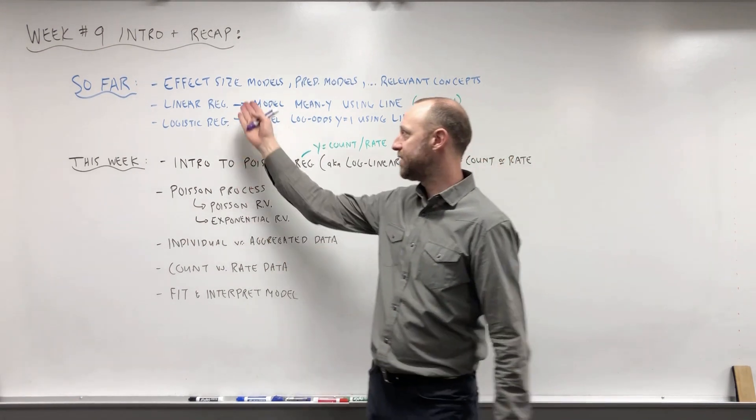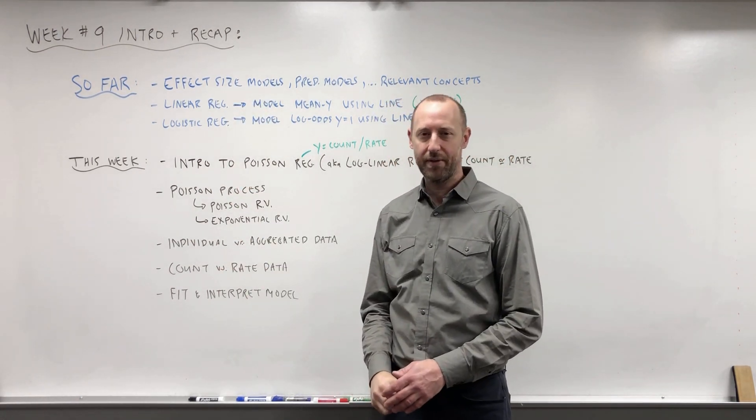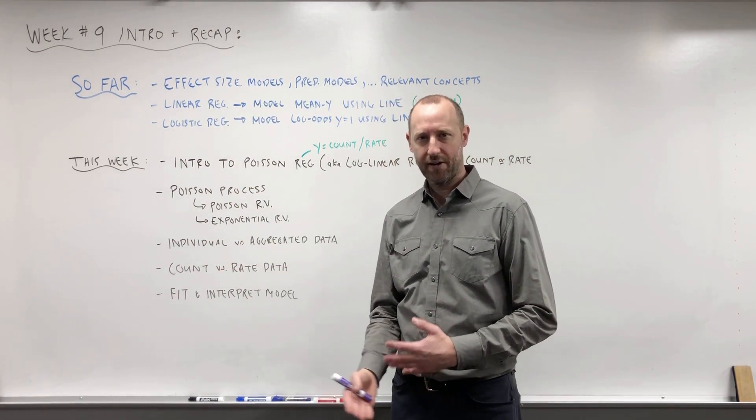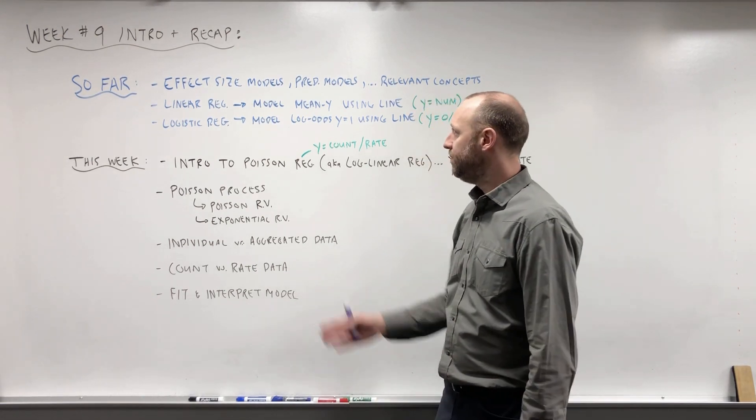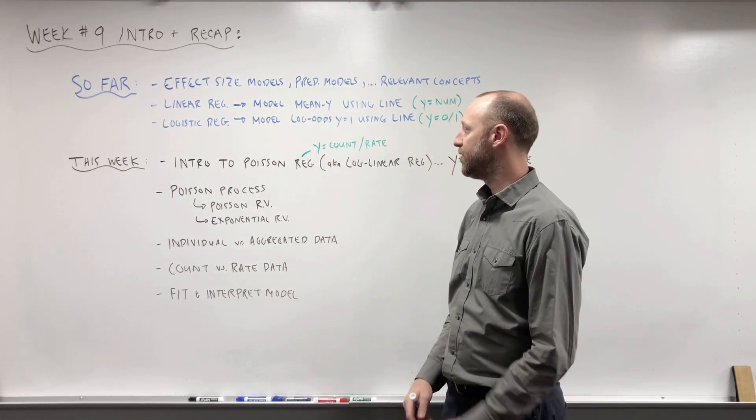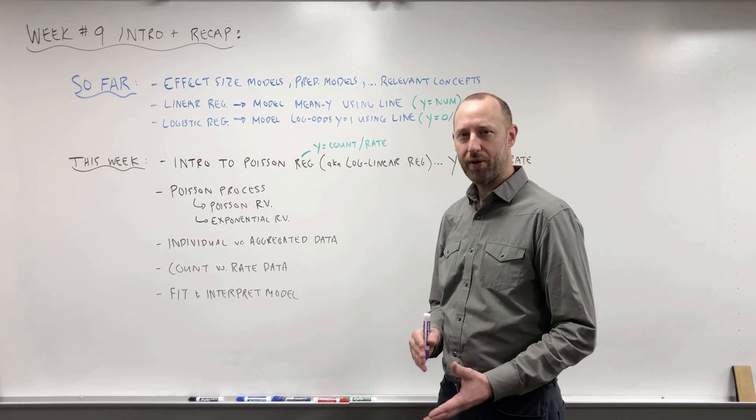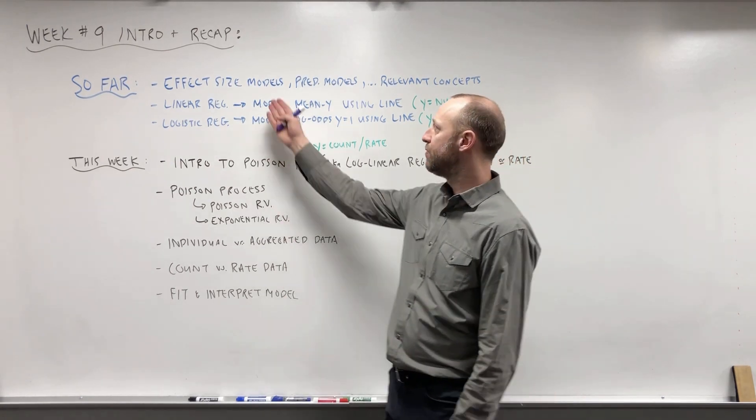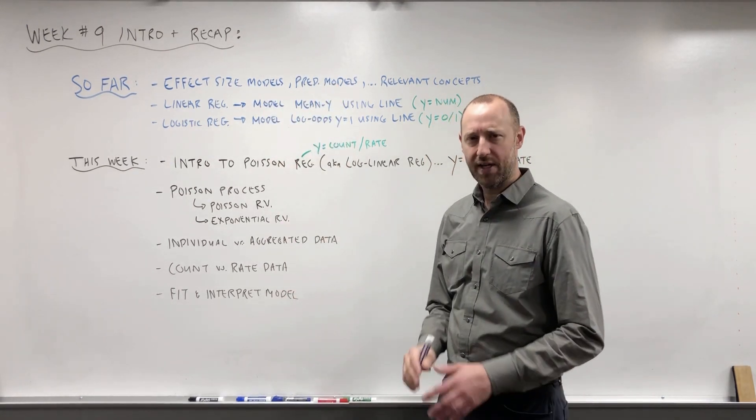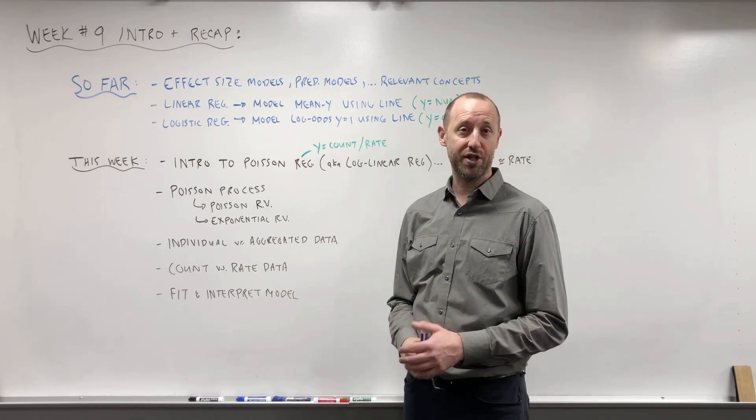In effect size models, what does it mean for variables to be confounders, effect modifiers, mediators, these sorts of things, how can we assess them and account for them? And we talked about model building and variable selection techniques for effect size models or predictive models. And these apply to whatever regression model we're working with.